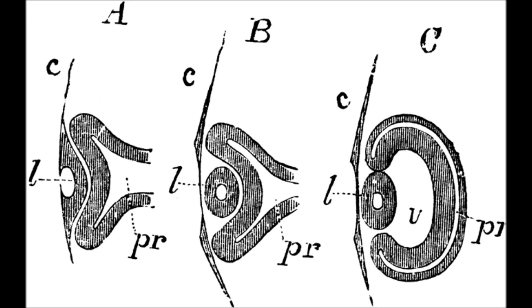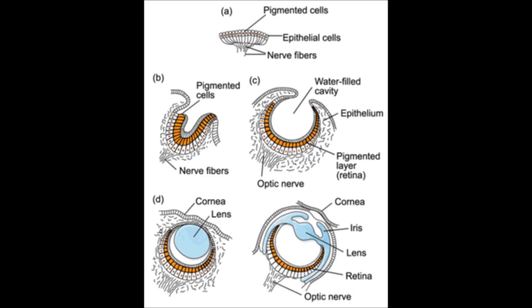From this pair of diverticula, formed from the sides of the forebrain, and the mesodermal and ectodermal structures in contact with it, the two eyes develop.